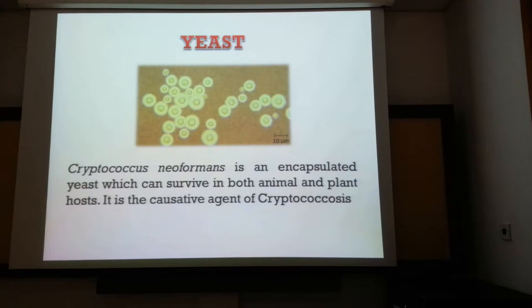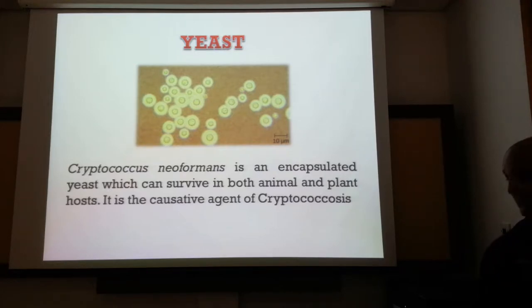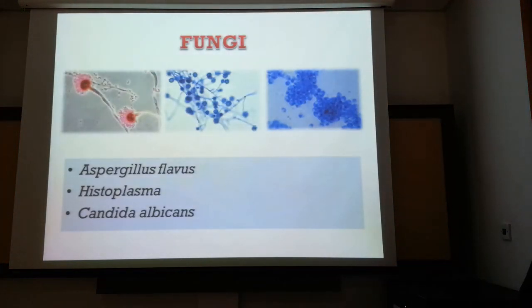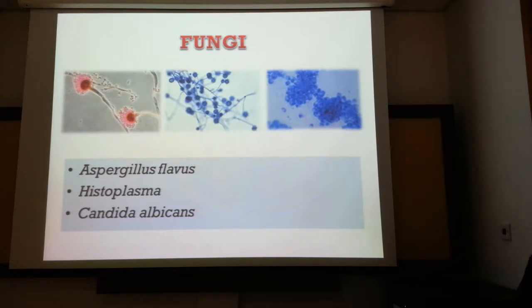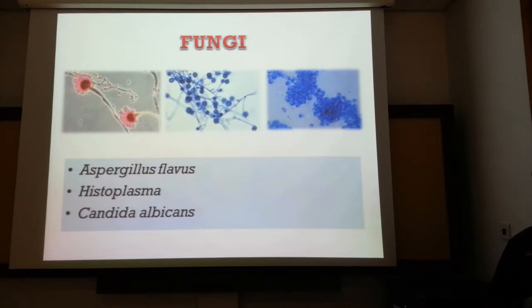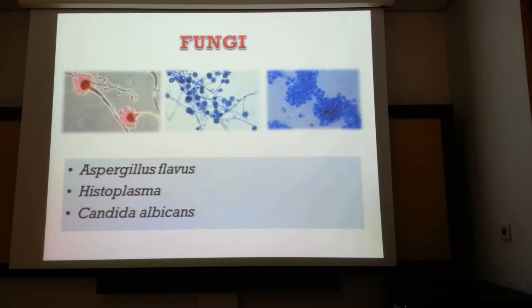Among the yeast, we have Cryptococcus neoformans, an encapsulated yeast that is pathogenic especially in immunocompromised patients. We also have fungi dispersed via spores — Aspergillus flavus can cause infection and produces aflatoxin. Histoplasma is spread by bird guano, and Candida albicans is a common yeast that can manifest as an infection in immunocompromised patients.